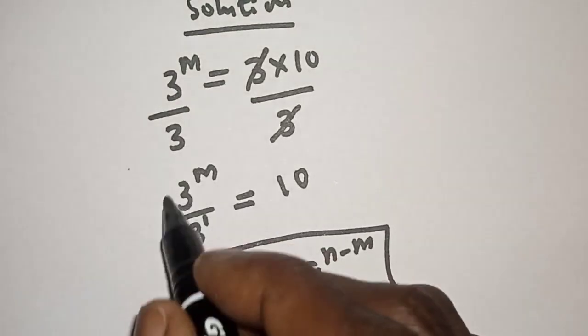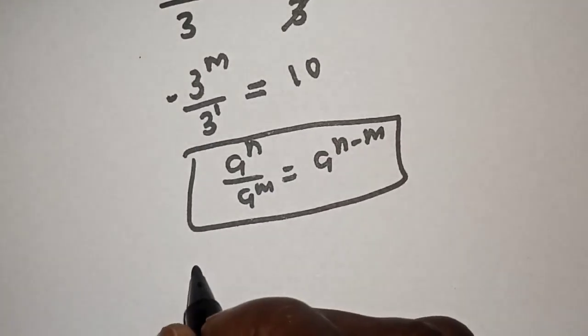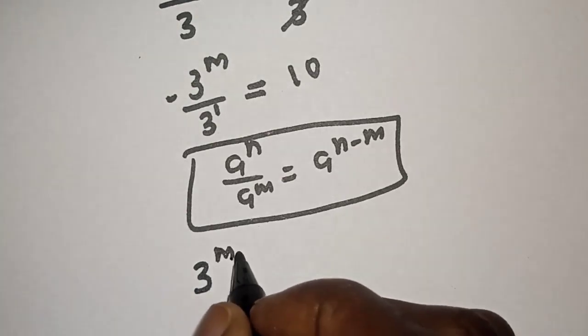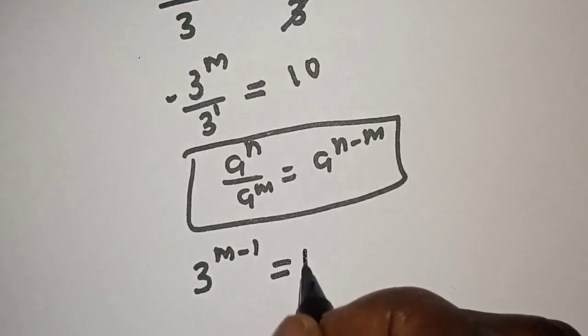So this can be written as 3 raised to power m minus 1, is equal to 10.